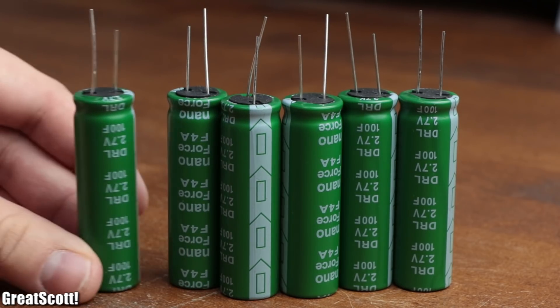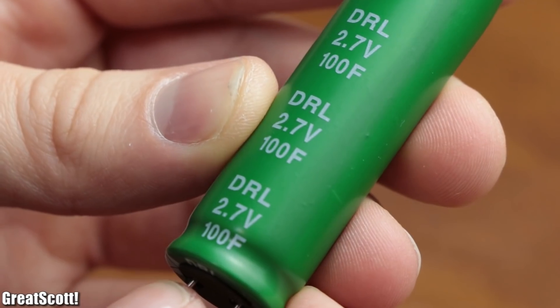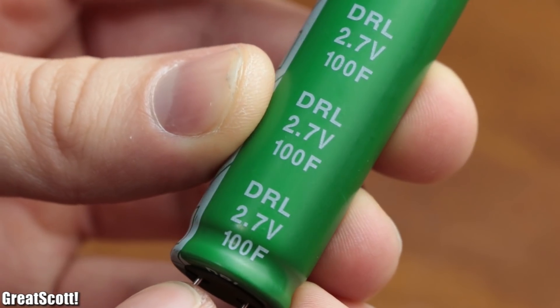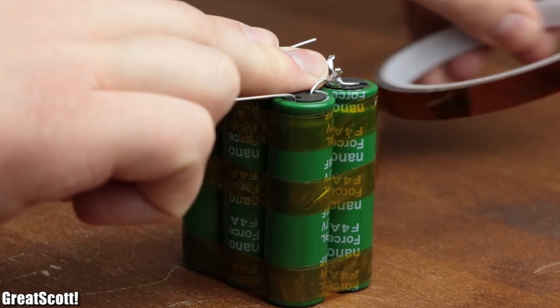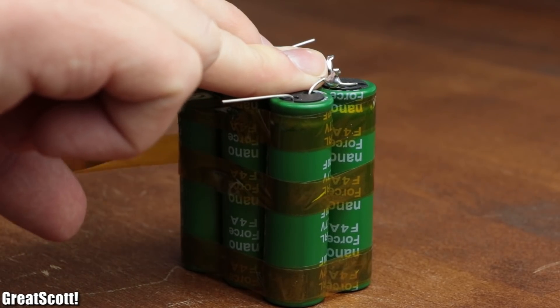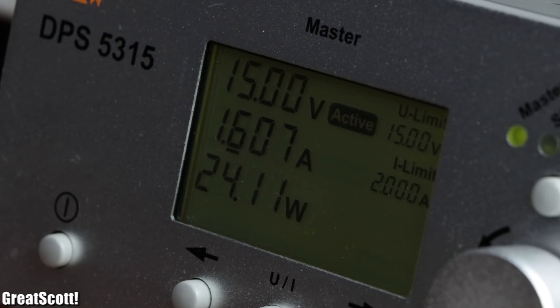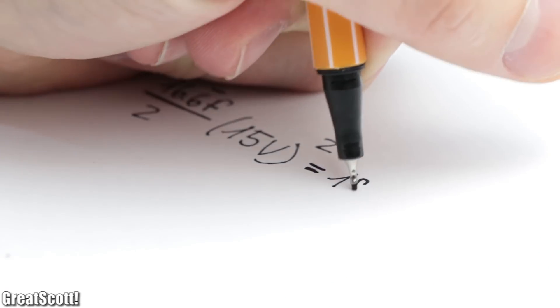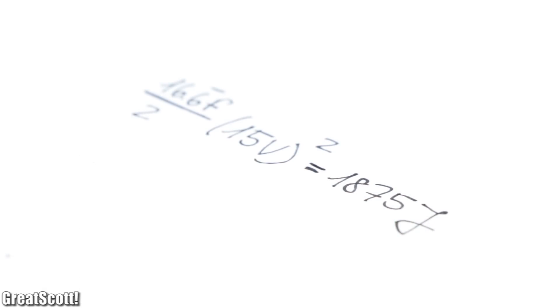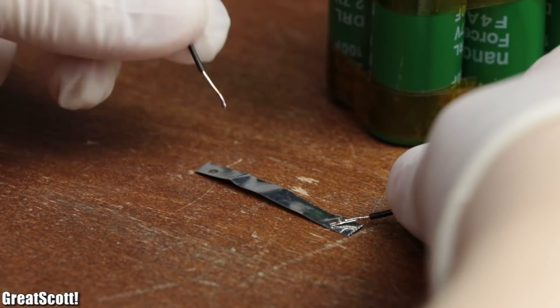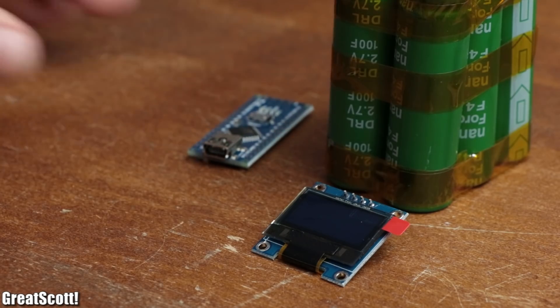But if we instead utilize supercapacitors with a capacity of whopping 100 farads, connect 6 of them in series, utilize Kapton tape to create a poor man's capacitor bank, and charge the pack up to 15 volts, then we successfully stored around 1875 joules of energy, which should be plenty for spot welding.